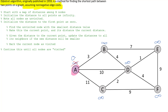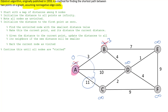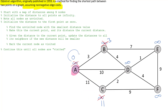We're at zero. Zero plus three is three — it costs zero to get to A and three more to get to B, so the distance to B is three. Is three less than infinity? Yes, so we replace infinity with three. Then zero plus eleven is eleven, which is less than infinity, so the distance to C is now eleven. Zero plus ten is ten, which is less than infinity, so the distance to D is ten. We're only updating nodes directly connected to A.